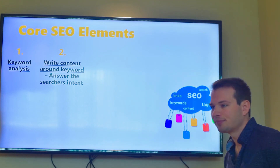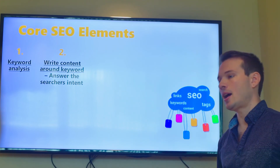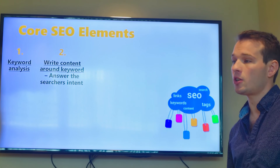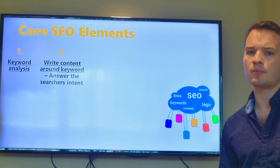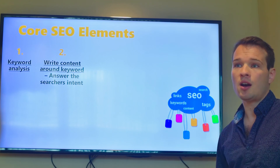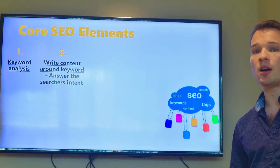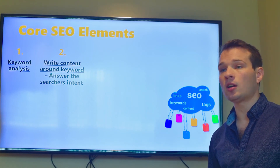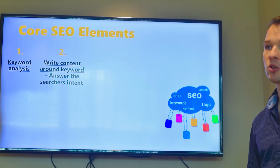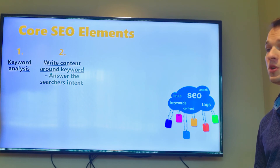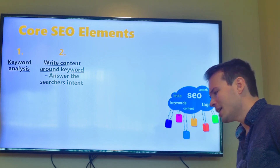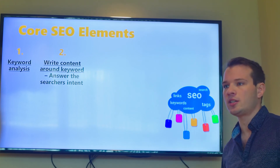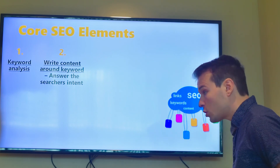You can do keyword research right in Google — looking at terms people are searching for — as well as in Google AdWords, which has a tool called Keyword Planner. You can see the search volume and get new keyword terms to create content around. Through AdWords, you can add them into a sheet and download to Excel, and use that as your strategy to create new content. Write content around that keyword — it's really important to answer the searcher's intent.